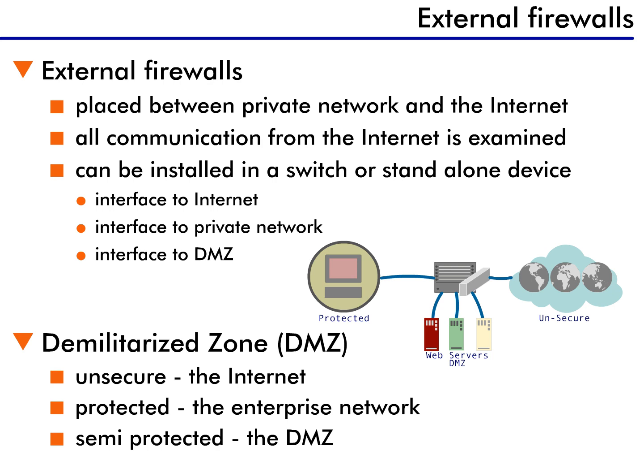Let's get back to learning about firewalls. There are two types of firewall implementations: external firewalls and internal firewalls. External firewalls are those implementations in which the firewall is placed between a private network and the Internet. External firewalls are typically used to protect a trusted network from an untrusted one.